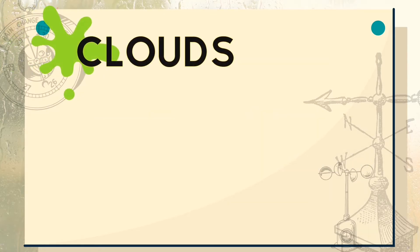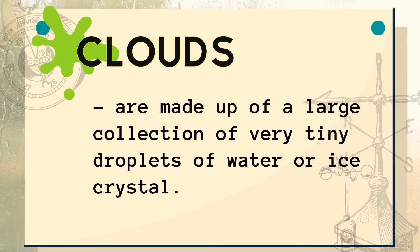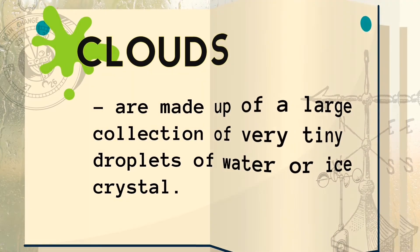Another component that affects weather is clouds. Clouds are made up of a large collection of very tiny droplets of water or ice crystals. When our surroundings become dark, the sky is cloudy. Clouds tell us the kind of weather we will have for the day. The wind plays a big role in the motion of clouds — where the wind goes, the clouds follow. Clouds move in the same direction as the wind.